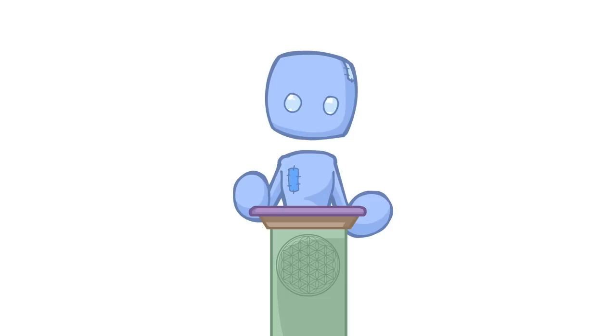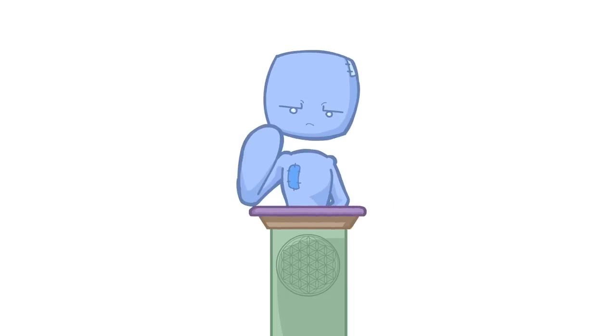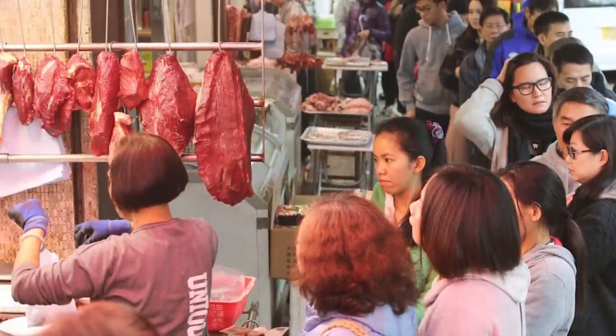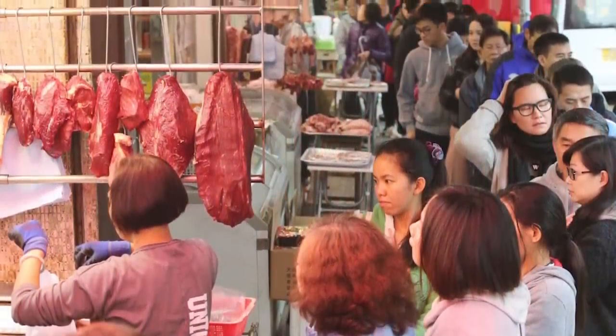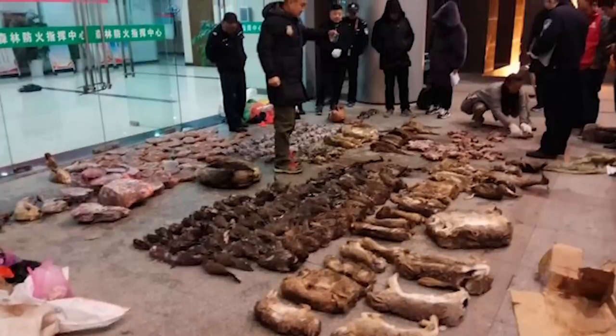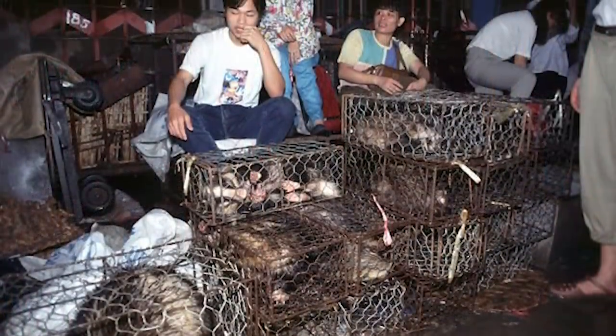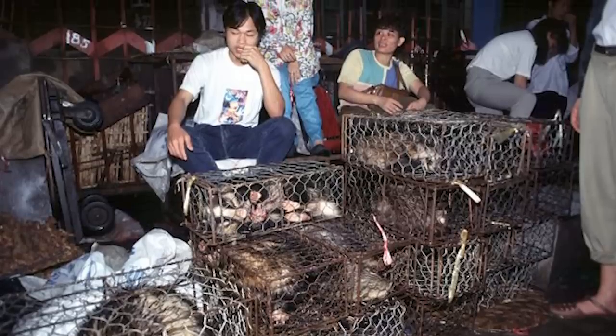What we believe to be true today is that the virus itself probably began within wet markets in Wuhan. Now there are some theories suggesting alternatives to this, but for now, as this is the leading theory, let's continue with this idea. These are filthy environments for selling both live and dead animals. And these environments are places that bacteria and viruses can easily mutate and spread.